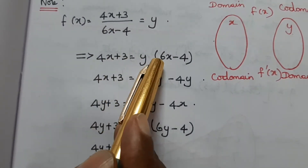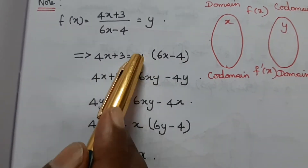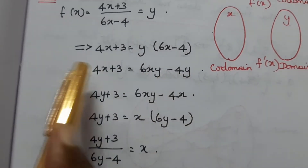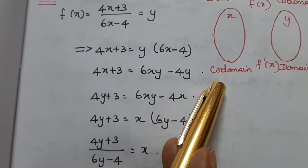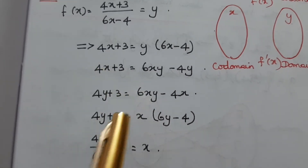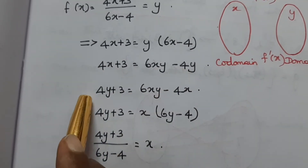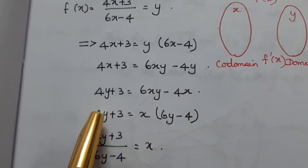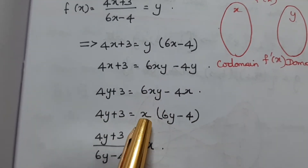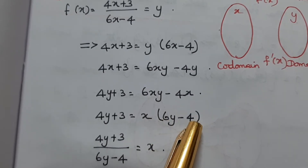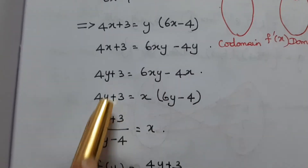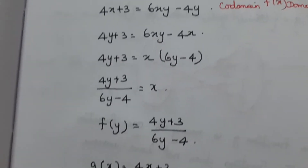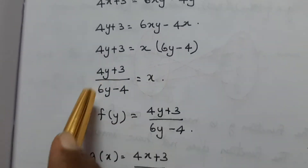To find the inverse: set y equals 4x plus 3 divided by 6x minus 4. Then y times 6x minus 4 equals 4x plus 3, so 6xy minus 4y equals 4x plus 3. Rearranging: 6xy minus 4x equals 4y plus 3, so x times 6y minus 4 equals 4y plus 3, giving x equals 4y plus 3 divided by 6y minus 4.